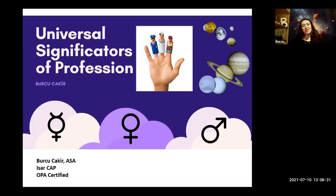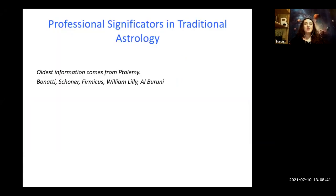I would like to talk about professional significators in traditional astrology, especially Mercury, Venus, and Mars. In traditional astrology, the oldest information comes from Ptolemy. Of course, those who came after him made various additions, but Ptolemy's work has always been fundamental.